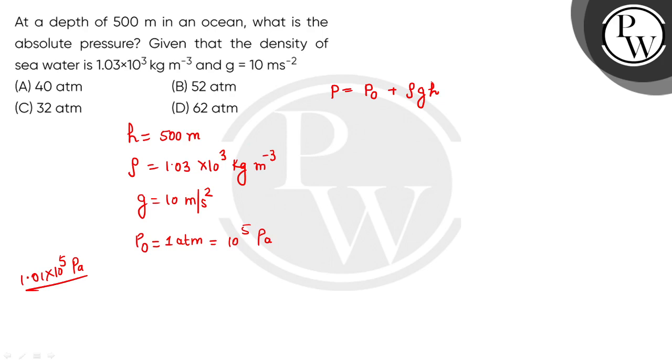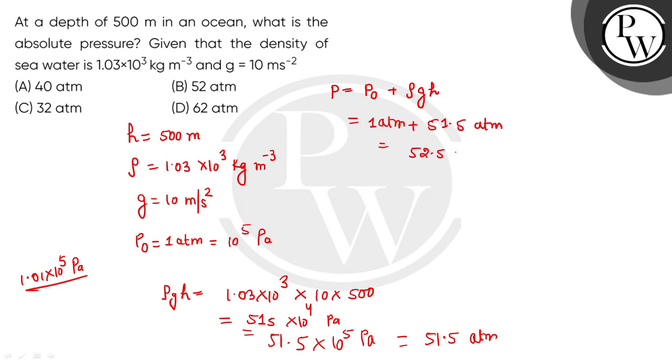So we can add 1.01×10⁵ Pascal atmospheric pressure, or approximately 52 atmospheres. So absolute pressure that would be 52 atmospheres, which we can see in option B, so option B would be the correct answer.